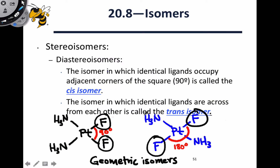In this square planar coordination chemistry context, the compound in which identical ligands occupy positions that are 90 degrees apart is known as the cis isomer, while the compound in which identical ligands are across from one another — where the two Pt-F bonds are bisected by the ammonia and platinum atoms — is known as the trans isomer. Trans means across, and in this structure the two fluorine ligands are across from one another separated by a bond angle of 180 degrees, while cis indicates those two ligands are relatively close.